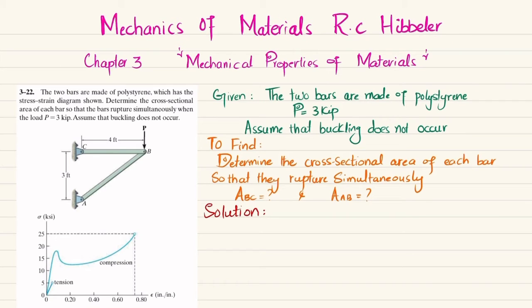So the statement is: two bars are made of polystyrene, which has the stress strain diagram shown. Determine the cross-sectional area of each bar so that the bars rupture simultaneously when load P of 3 kips is applied. Assume that buckling does not occur.